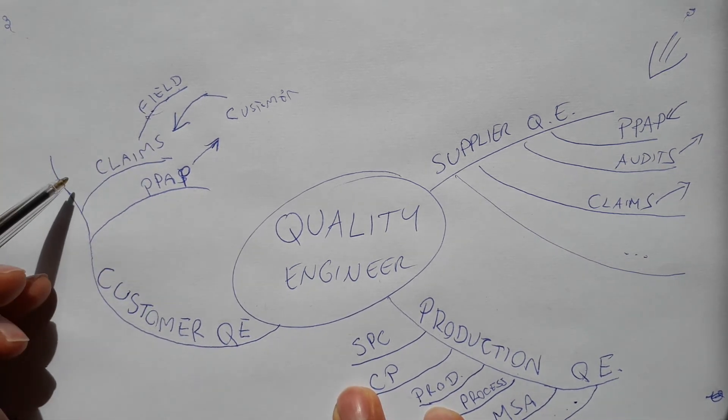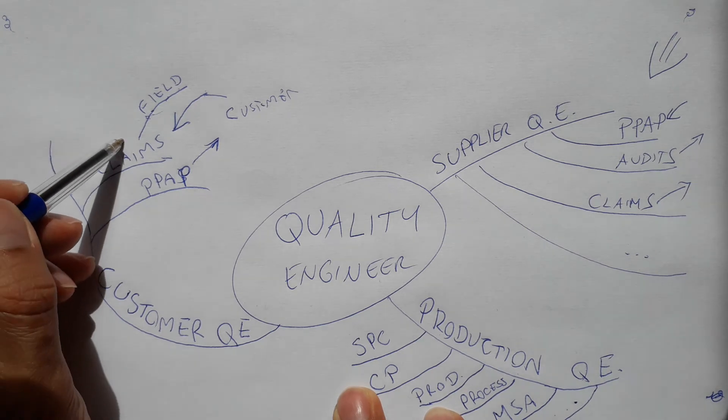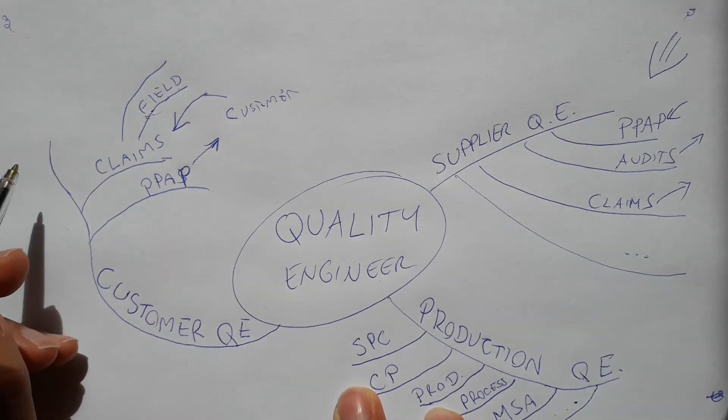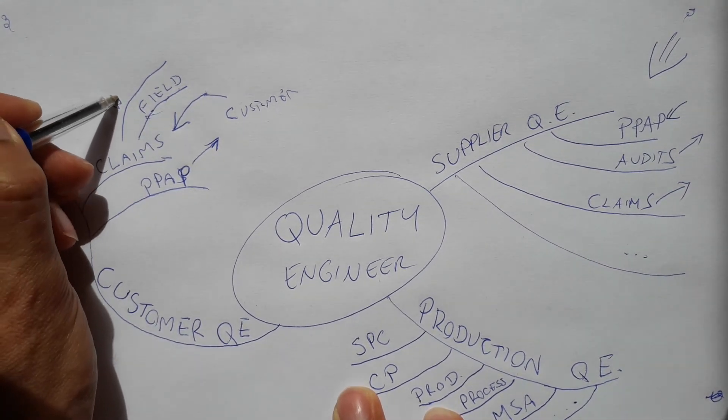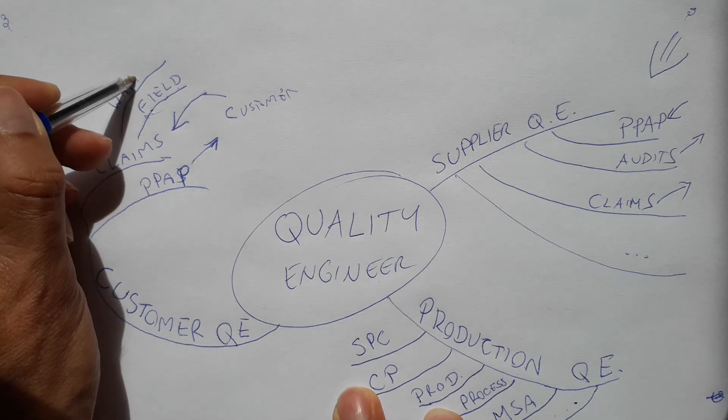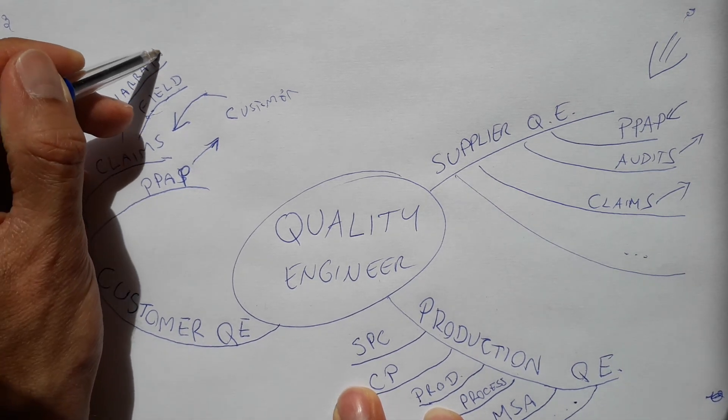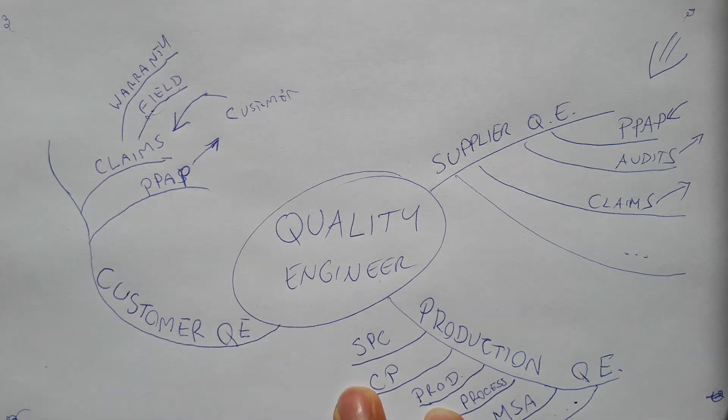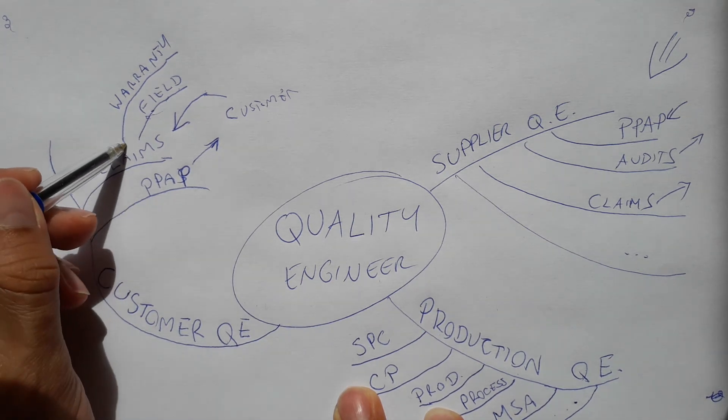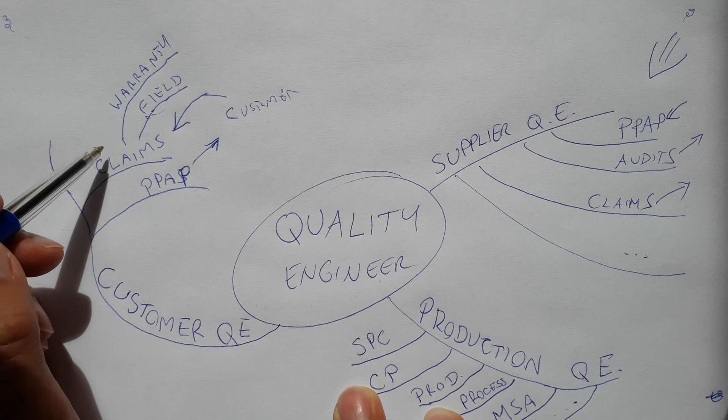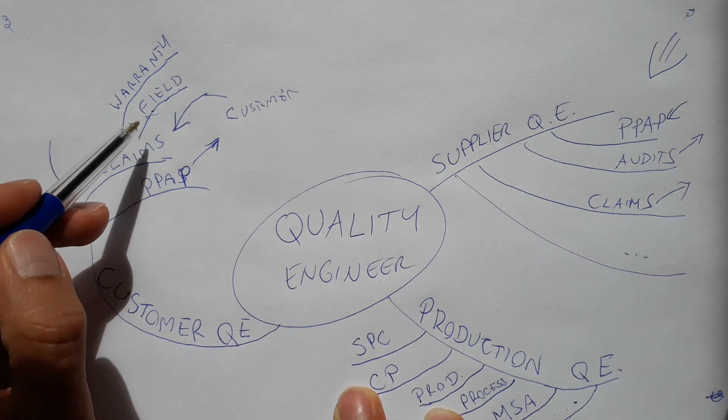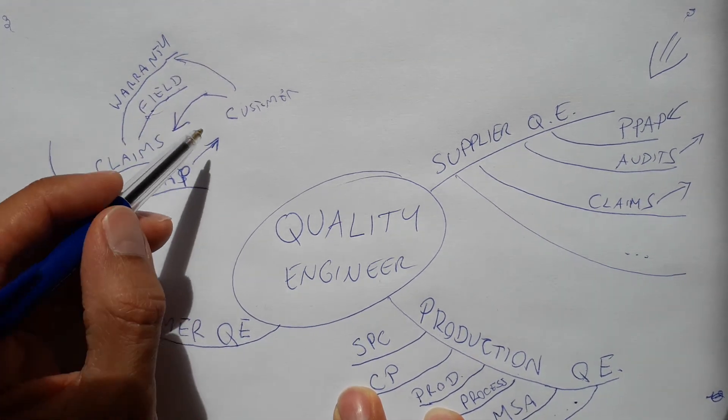Then another type: warranty claims. After a period of time, you have a warranty period, and the claims that are coming are in the range or in the frame of warranty. Everything is coming from the client.